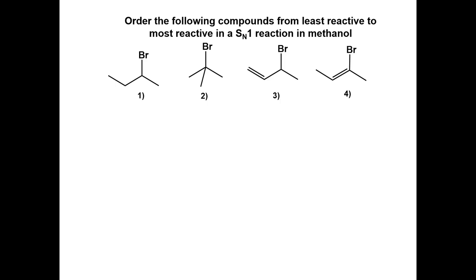Order the following compounds from most reactive to least reactive in an SN1 reaction in methanol. The leaving group for each reaction is the same. Thus we are looking for the differences in the carbocation that is formed.